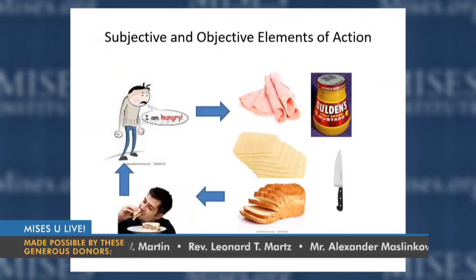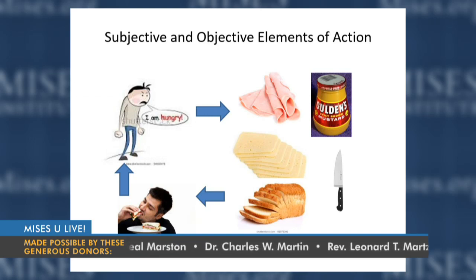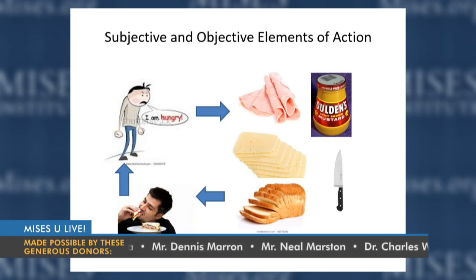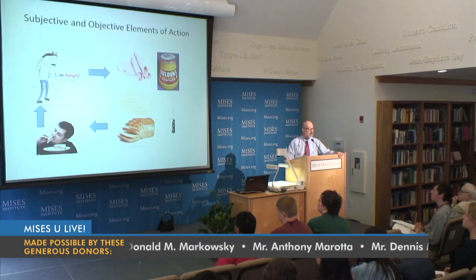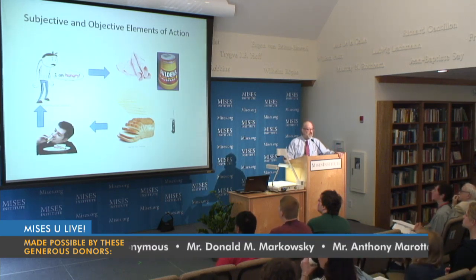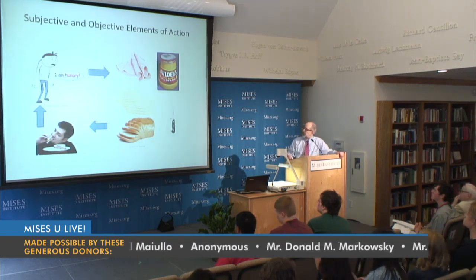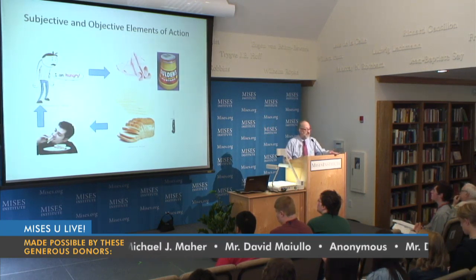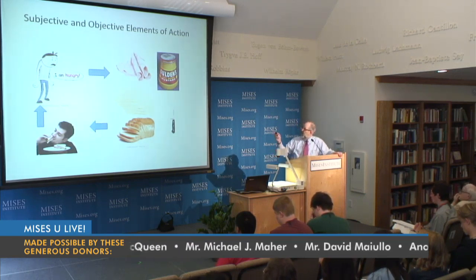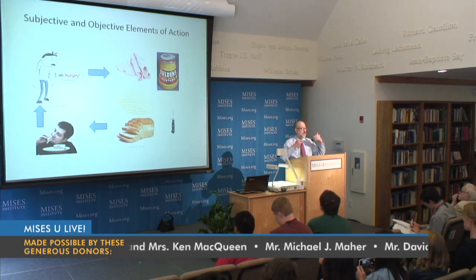Simple example: there's a man who's hungry — a subjective want, a lack of the food that satisfies hunger. There are scarce, costly resources available in the real world. He puts together a sandwich, combines them, and achieves satisfaction. That's Menger's idea of economic activity in diagrammatic form. Crucially, goods are only valuable to the extent they satisfy the ends. If someone is a vegetarian who doesn't eat carbs and hates mustard, those things are worthless — no matter how much they cost to produce, they have no value to that person.